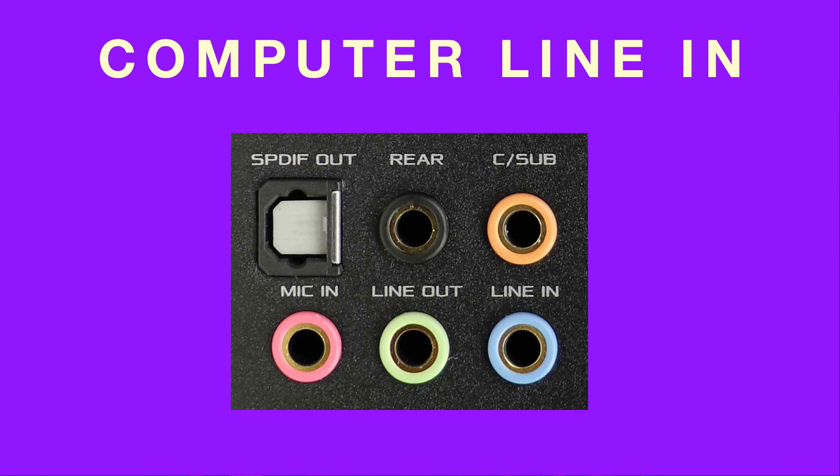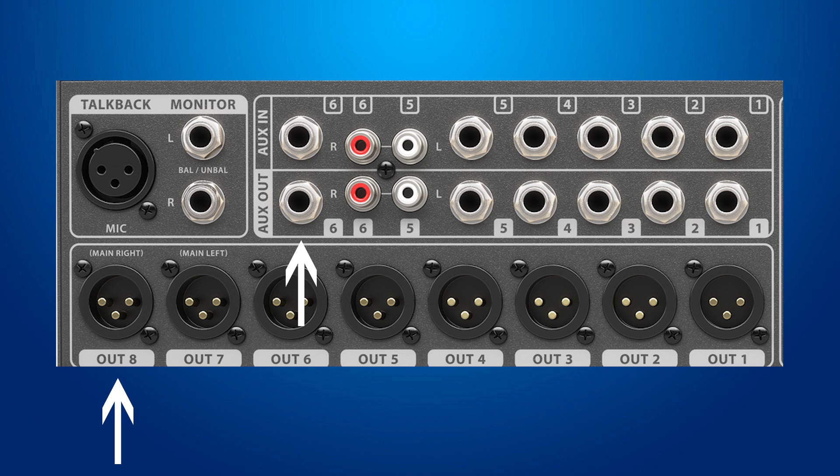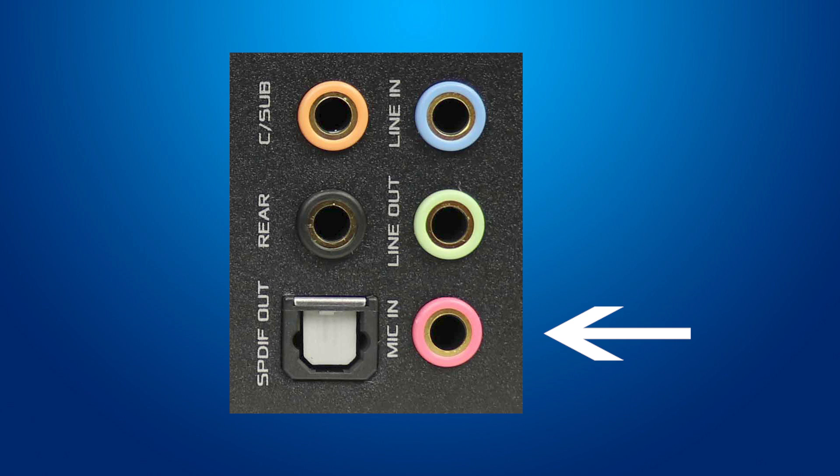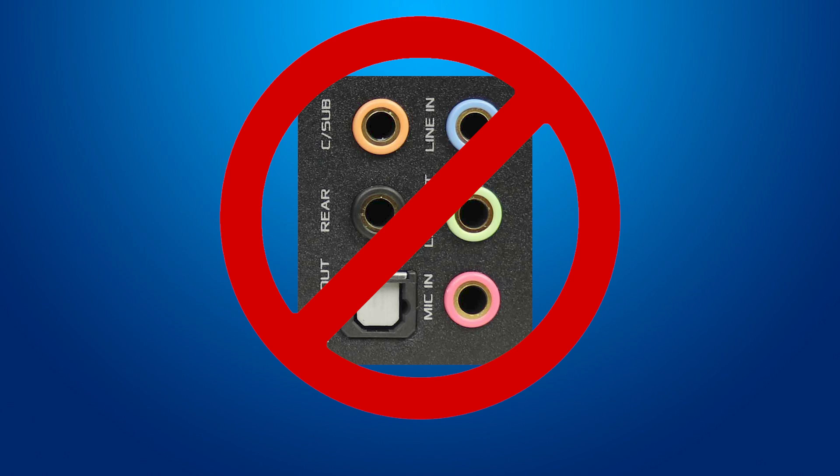Number one is computer mic/line input. Almost all computers have an eighth-inch line input on the motherboard of the computer. The line input is normally colored blue. You can connect a mixer's XLR, quarter inch, or RCA plugs to your motherboard's line input with cables like these. Don't plug your mixer into the red microphone port, as your mixer's level is a line level signal and needs to be plugged into the blue line level input. I do not recommend using these connections on the motherboard unless you have absolutely no other choice, because the quality of these inputs is low and many times they add a lot of noise to your audio during the analog to digital conversion.